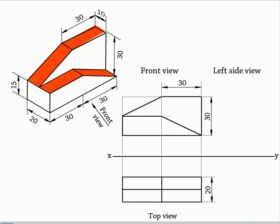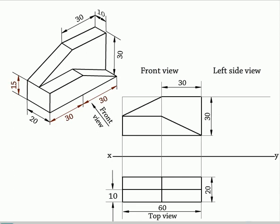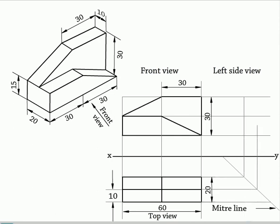The left side view will come to the right of the front view. Draw the projectors from the front view horizontally. First draw the miter line and draw the projectors from the top view through the miter line. Now complete the left side view and show the dimensions appropriately in the view.